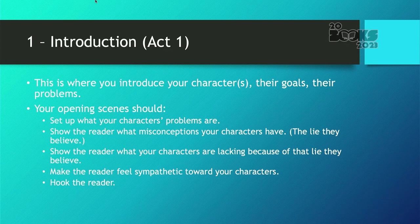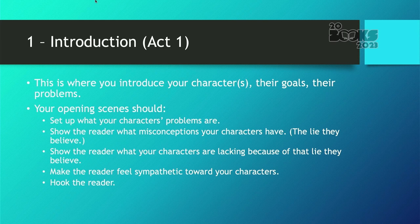In the introduction part — act one — this is where you introduce your characters, their goals, and their problems. Your opening scenes should set up what your character's problems are and show the reader what misconceptions your characters have. This is the lie that they believe, and show the reader what your characters are lacking because of that lie. Make the reader feel sympathetic towards your characters, and of course you want to hook the reader in these opening paragraphs.